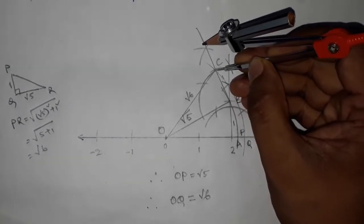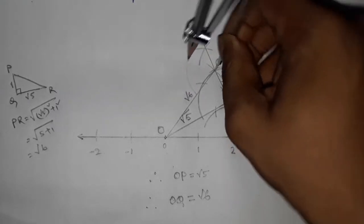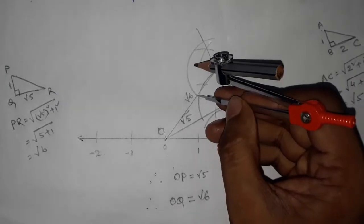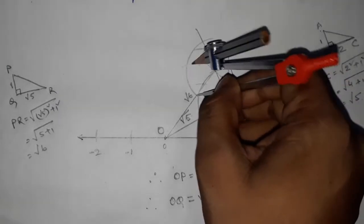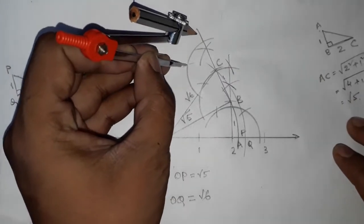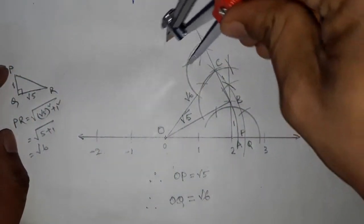So next we have to draw a 90 degree angle at point C. Again, if you don't know how to construct a 90 degree angle, then please watch my video which I have on my channel.